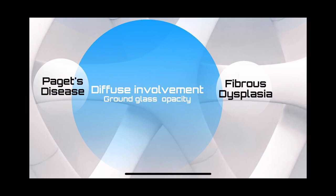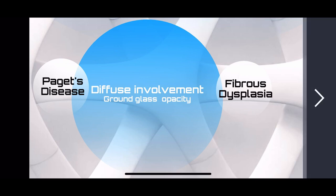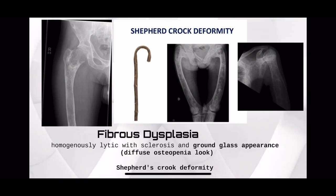Then there are the diffuse lesions — these have a generic appearance and are sometimes confused with osteomyelitis, Paget's disease, and fibrous dysplasia. In fibrous dysplasia, you see a ground-glass appearance, a diffuse osteopenic look, with interspersed areas of sclerosis and lysis. They are mostly polyostotic but can be monoostotic. Particularly in the femur, they cause coxa vara or bowing of the femur — a shepherd's crook deformity.